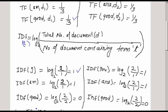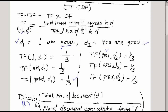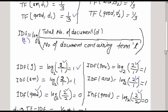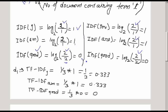When we calculate the IDF for 'good', the total number of documents is still 2. However, 'good' is present in both D1 and D2, so the number of documents containing 'good' is 2. This gives us log base 2 of 2/2, which is log base 2 of 1, which equals 0. Similarly, IDF for 'you', 'are' also evaluates accordingly.